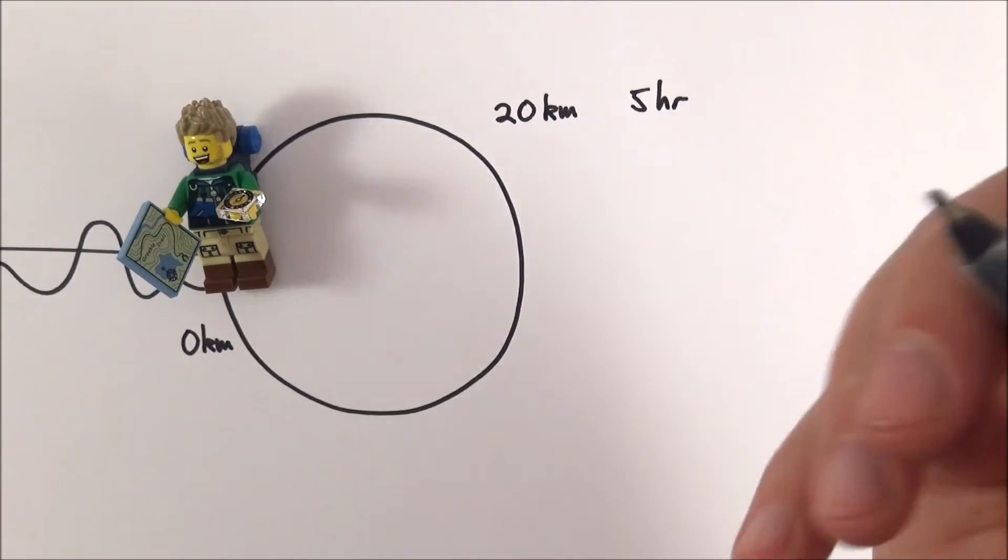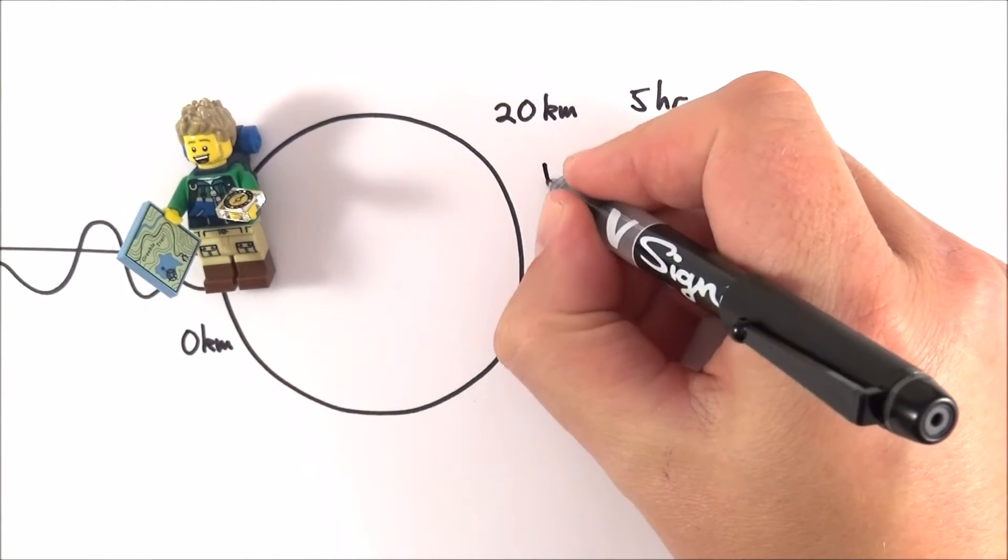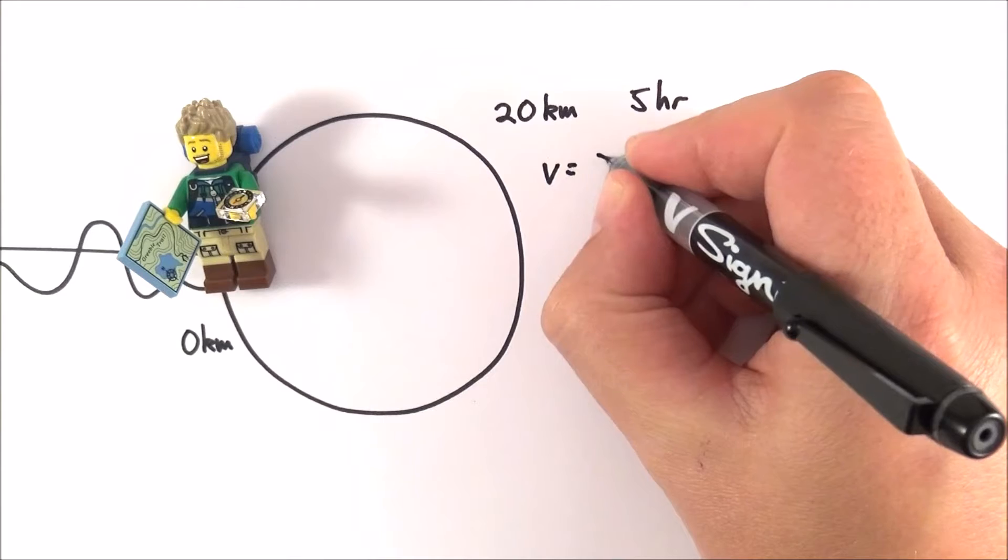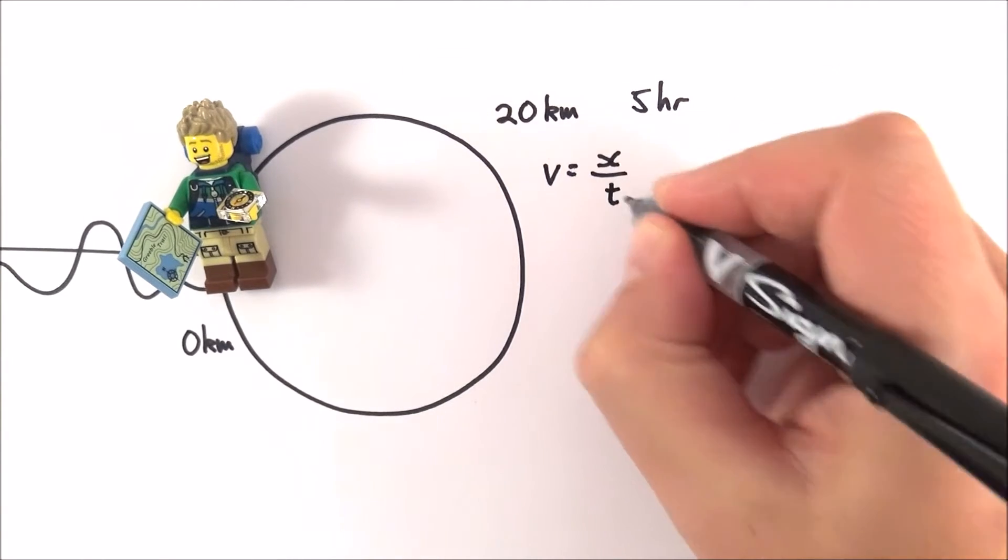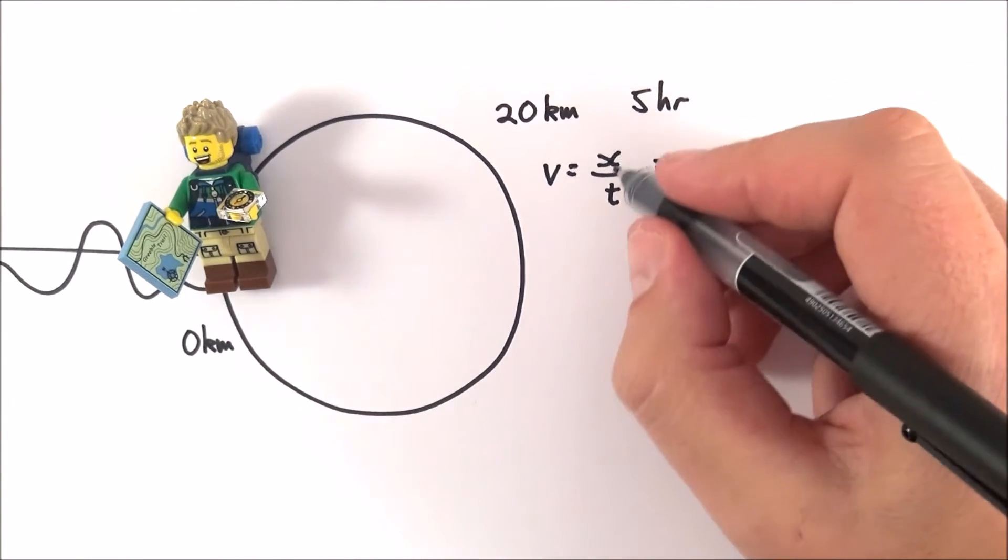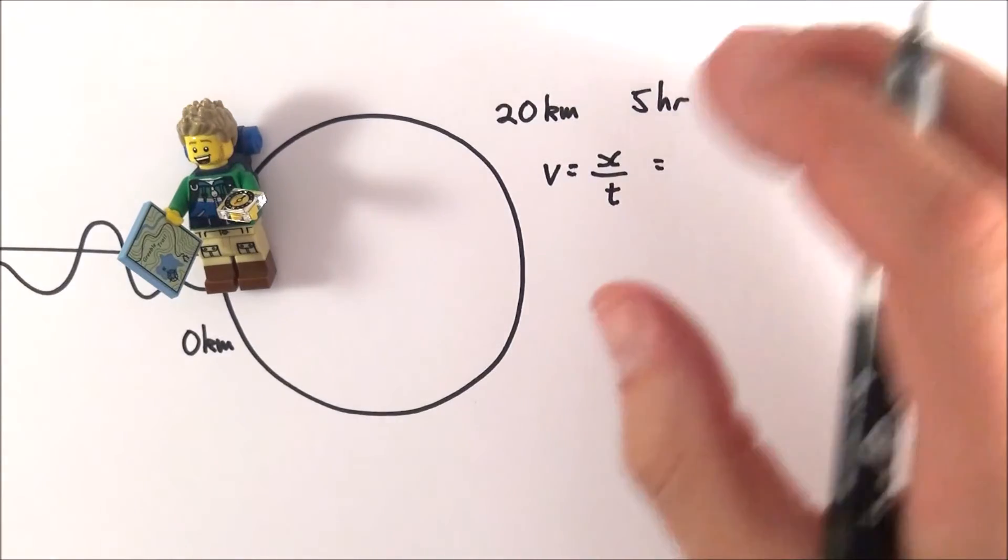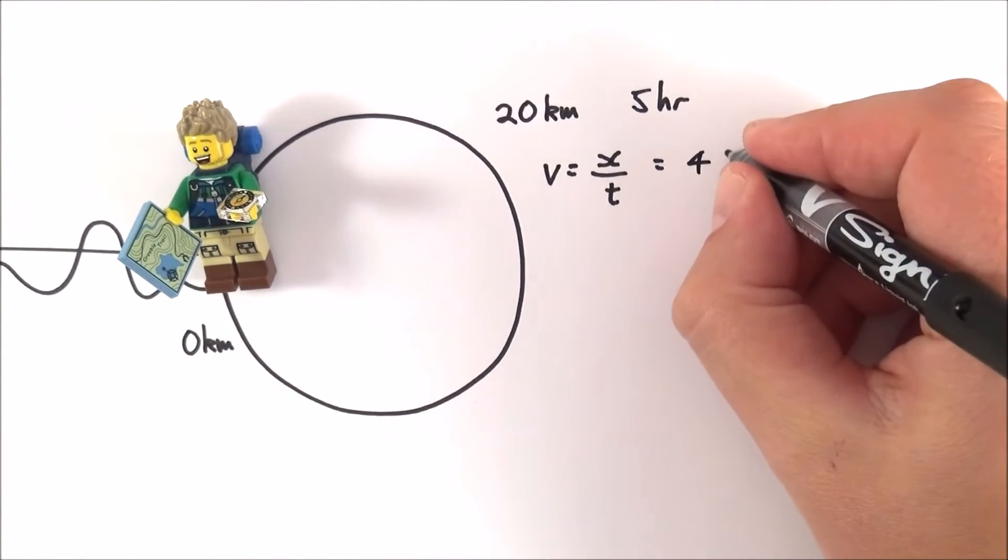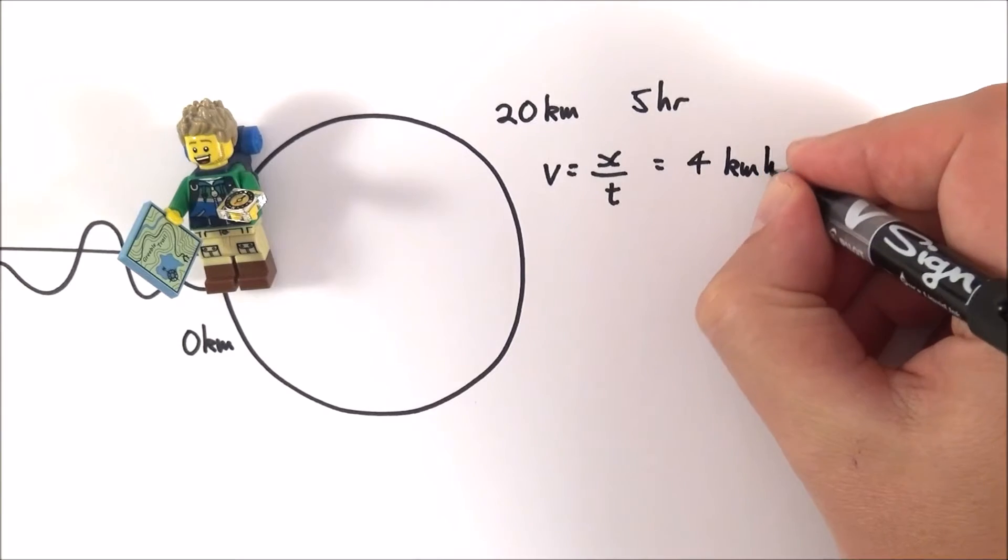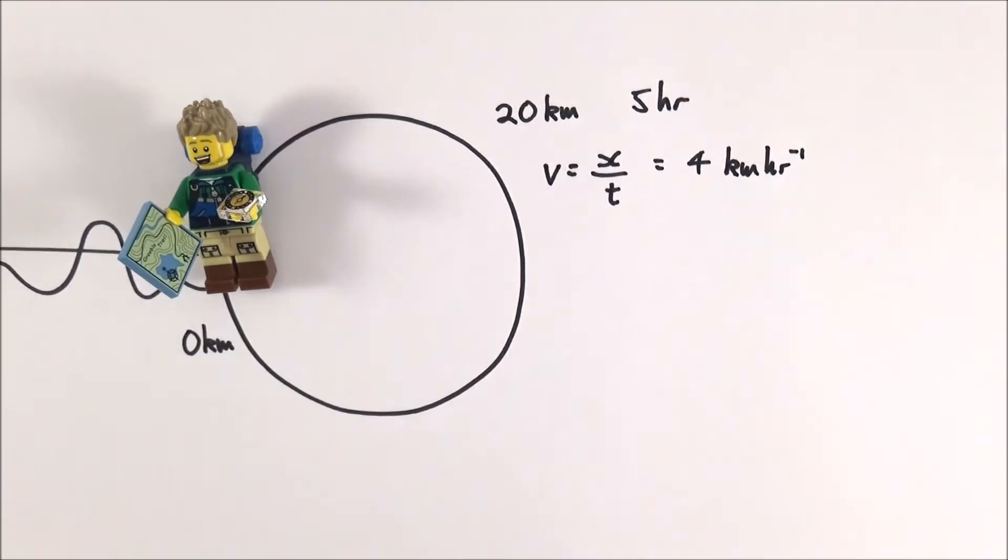So for example if we want to know their average speed, their average speed is going to be equal to their total distance traveled over the total time which in this case is going to be 20 kilometers over five hours which is just four kilometers per hour, which is a fairly good pace.